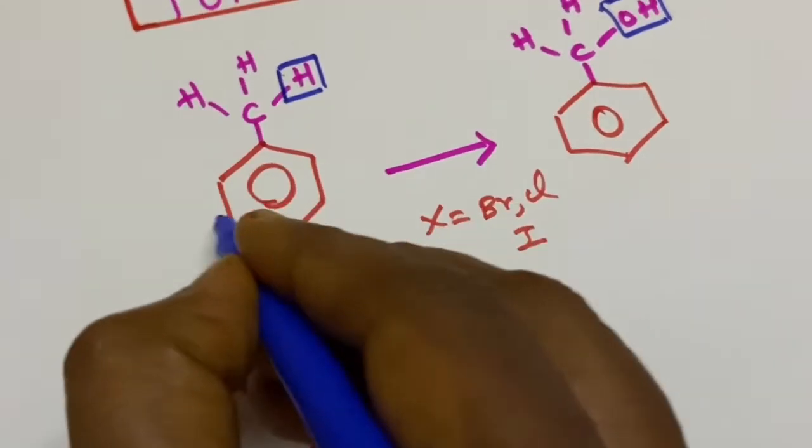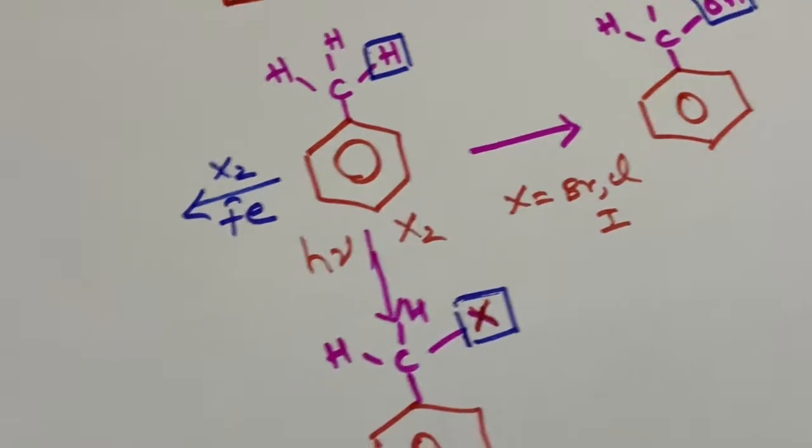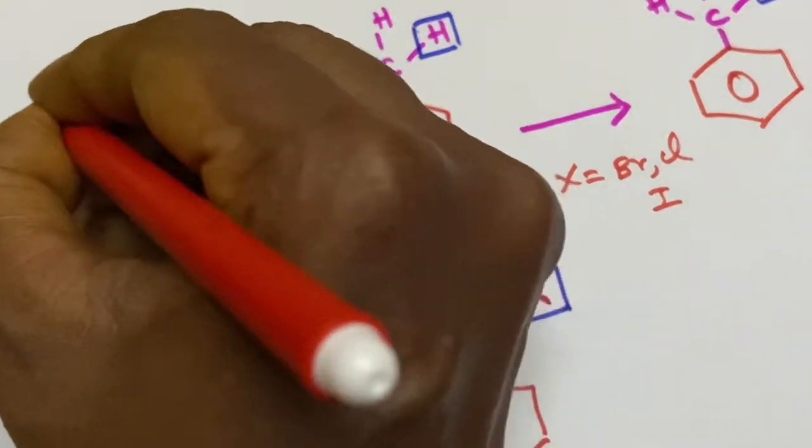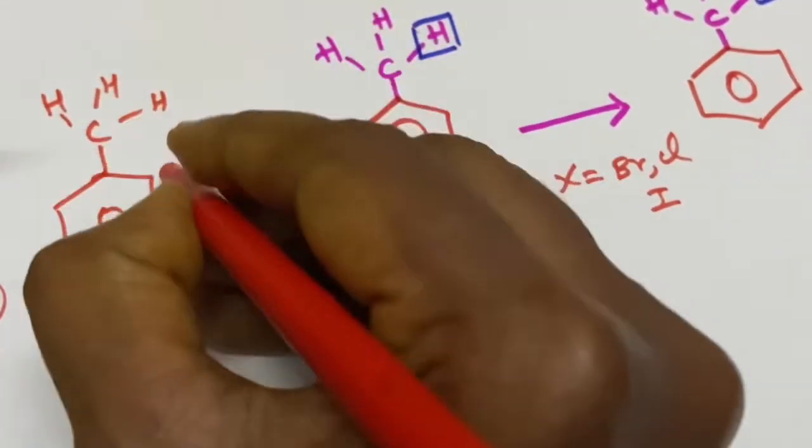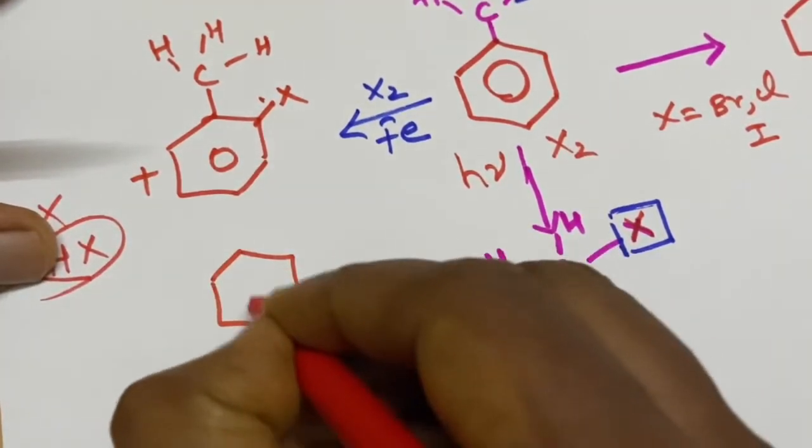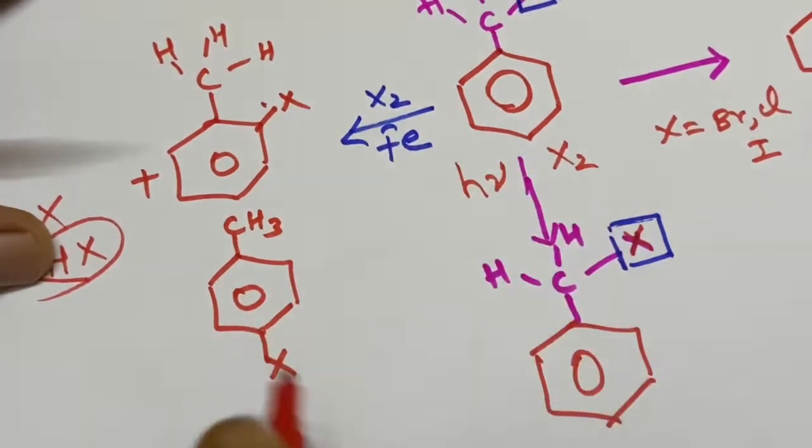If you use halogen in presence of any other catalyst, any other metal catalyst, then the reaction will take place in the ring and not in the side chain. Then you will get the ortho product and the para product and the reaction will not take place in the side chain.